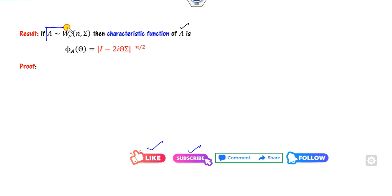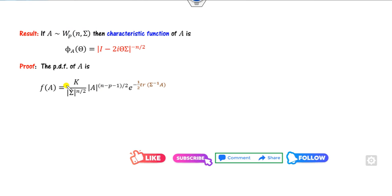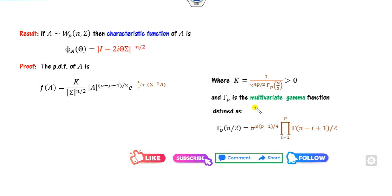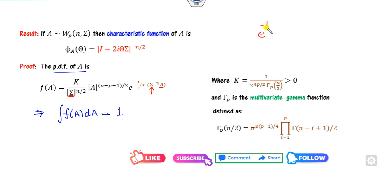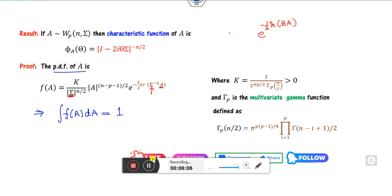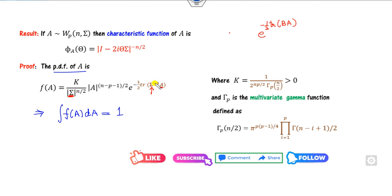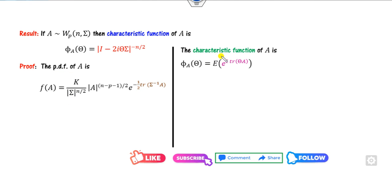Given that A follows the Wishart distribution, I can define its PDF in this manner, where K is my positive constant and gamma is as defined. The key observation is that whatever the coefficient of A is, it involves Sigma inverse. I can rewrite and relabel the term involving Sigma as B of A. Because it is Sigma inverse, I can return this expression accordingly — if I write it as B inverse, then it is 1 over B. Now let us start with the characteristic function.